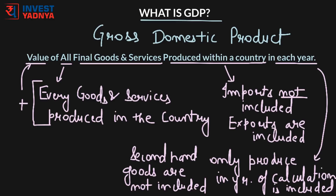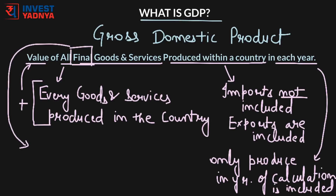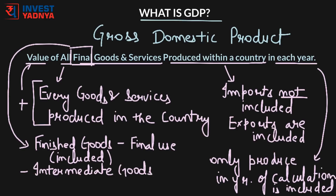Another important factor in the calculation of GDP is that it only includes finished goods and not intermediate goods, unless they are capital goods. Finished goods are those which cannot be sold again and are purchased for their final use — for example, when a person buys a t-shirt, it is a finished good and its price is included in GDP. Intermediate goods are those used to make a finished good — for example, cotton yarn used to make the shirt is an intermediate good and its price is not included in GDP.